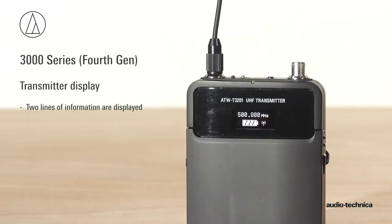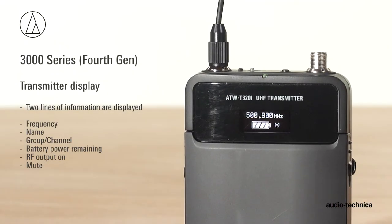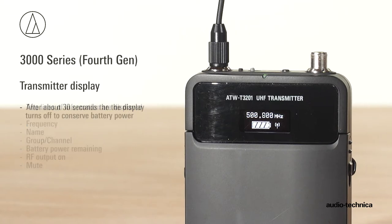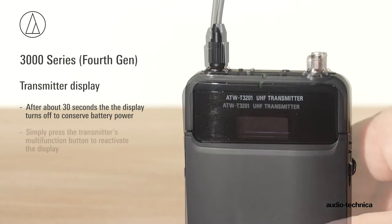The transmitters display two lines of information, including frequency, name, group channel, battery power remaining, RF output on, and mute. To conserve battery power, the display turns off after about 30 seconds.